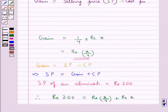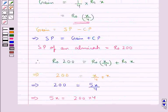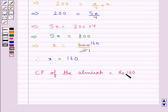And we had assumed X to be the cost price of an Almira. So we get the cost price (CP) of the Almira is equal to Rs. 160.